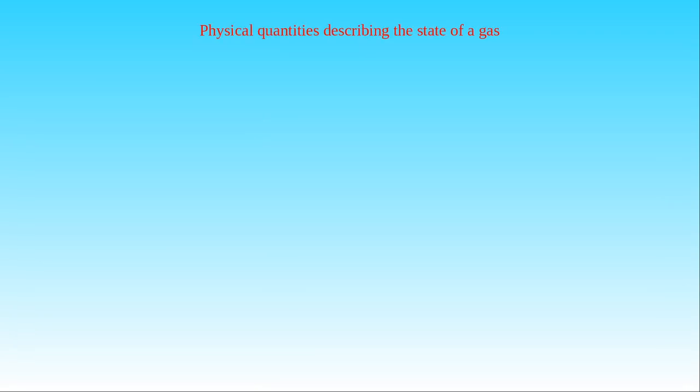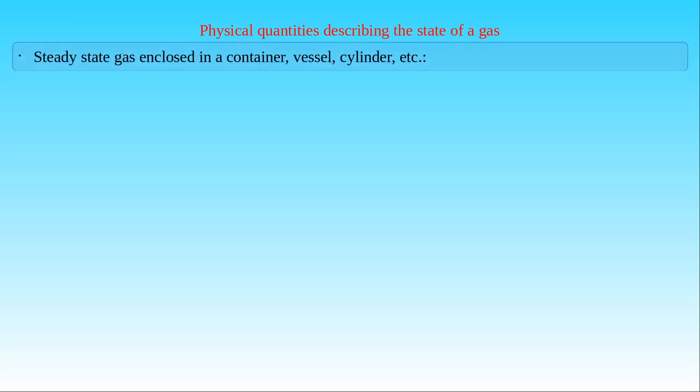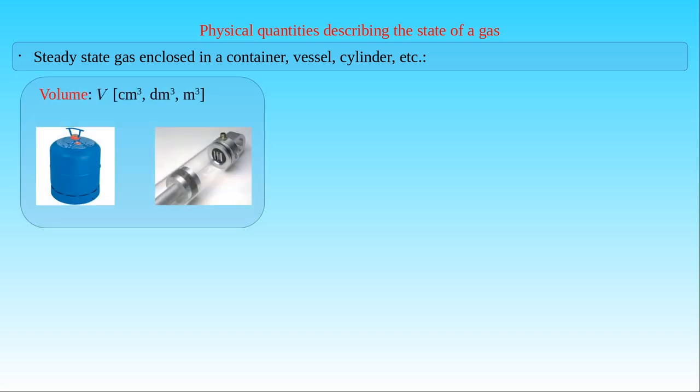These qualitative characteristics of a gas can be treated in a quantitative way by applying physical quantities to describe the state of a gas. Let us consider a container, vessel or cylinder filled with gas in a steady state. Then we can use the following quantities representing the physical state of the gas. The first one is the volume of the container, which is also the volume of the gas, since a gas fills up all the available space in its container. The usual units for the gas volume are cubic centimeter, cubic decimeter and cubic meter. For one cubic decimeter we use the unit liter.